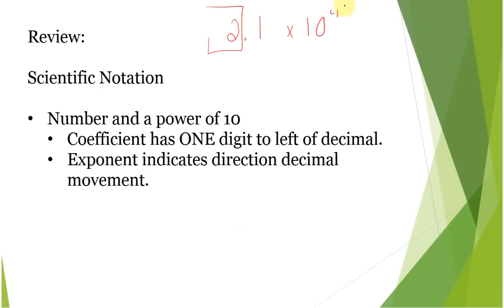The exponent, this 4, indicates how many spaces the decimal wants to move. Because it is a positive number, it indicates this is a very large number. So we're going to move it over 4 spaces, and it gives us 21,000.